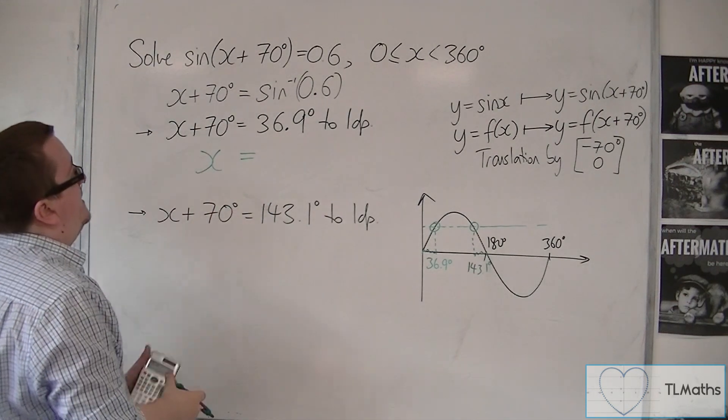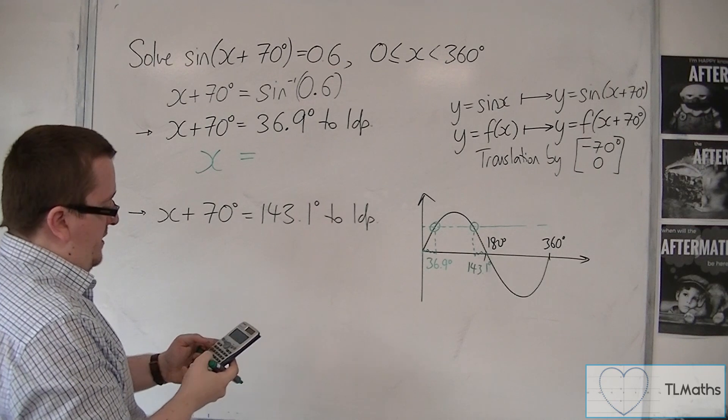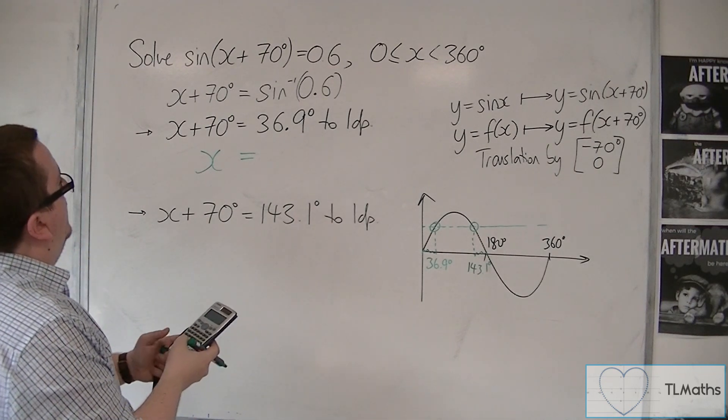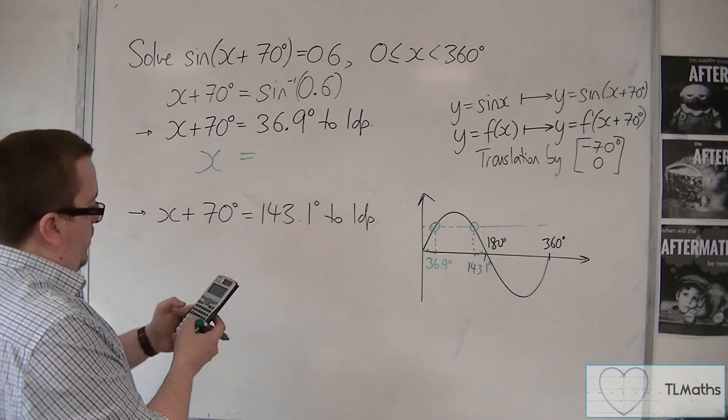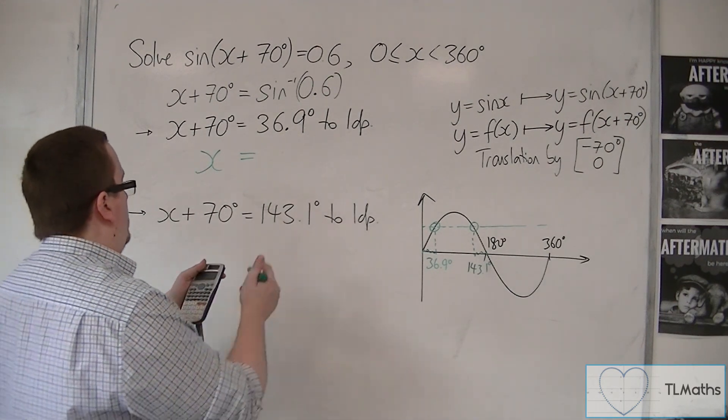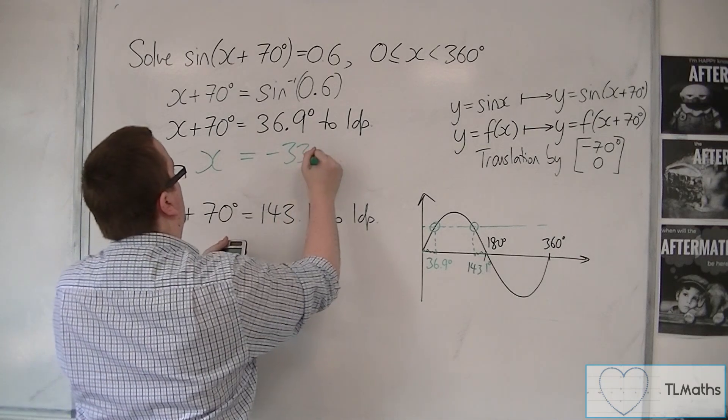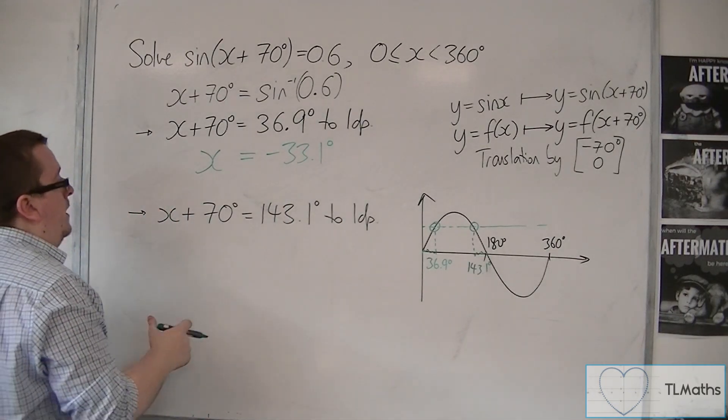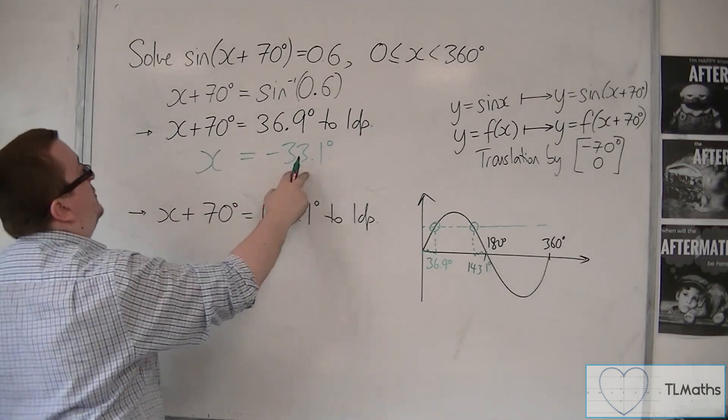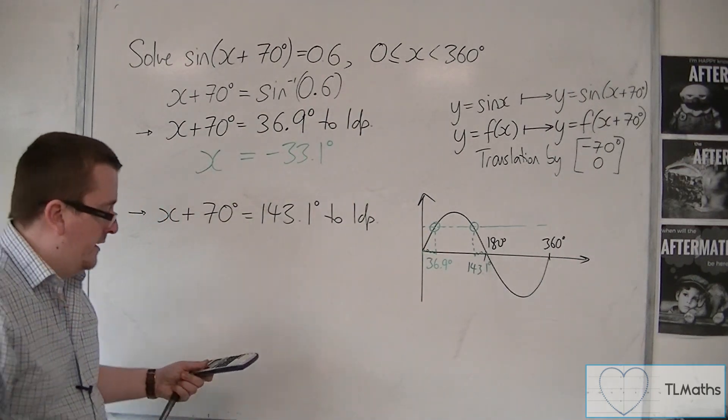So, 36.9 take away 70. So, I've got to get back to inverse sine of 0.6. Take away 70, and that gets me minus 33.1 degrees. Now, that is not between 0 and 360.